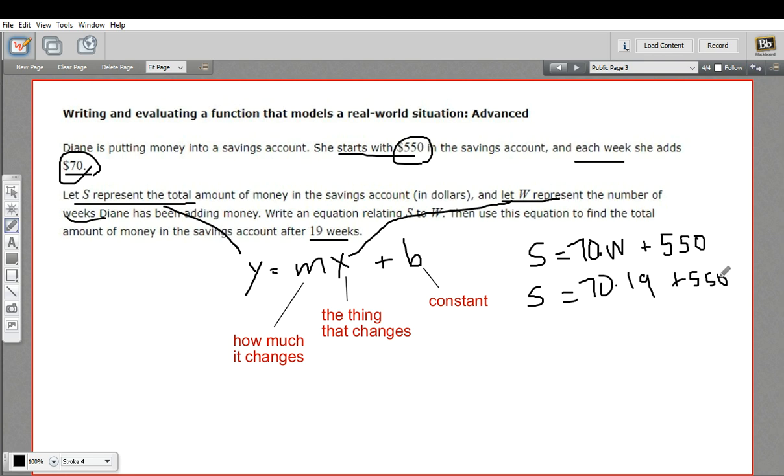Let me grab my calculator. So 70 times 19, that's 1330 plus 550. And that would be 1880.